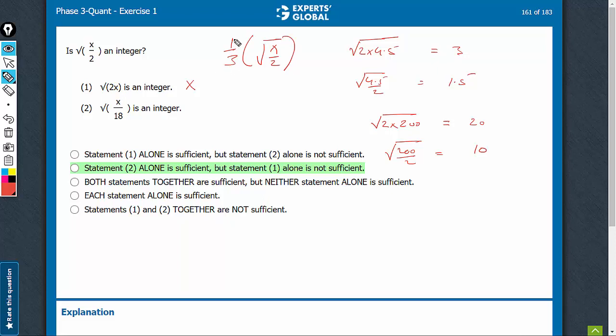And if 1/3 of √(x/2) is an integer, then √(x/2) is bound to be an integer. This is going to be 3i, which is, of course, going to be an integer.